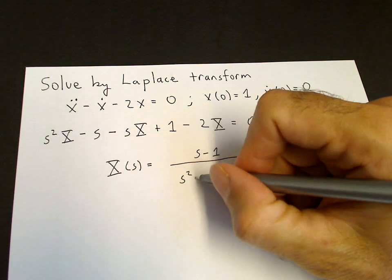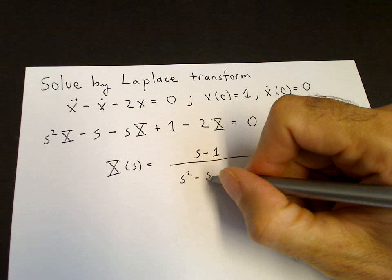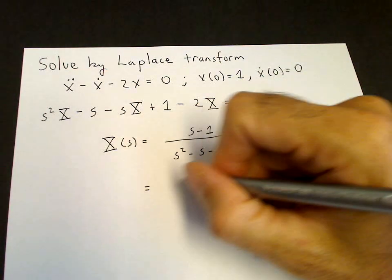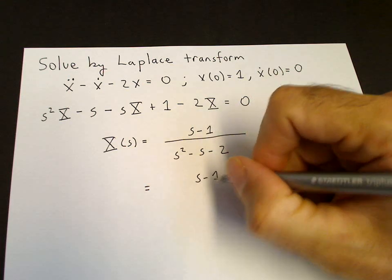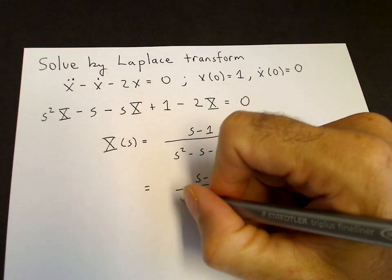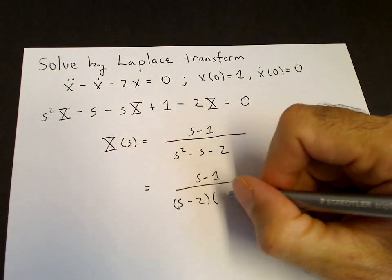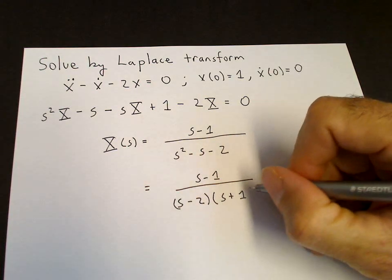The denominator is factorable, so this is S minus 1 over S minus 2 times S plus 1.